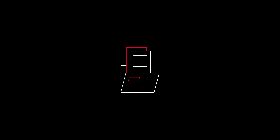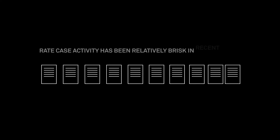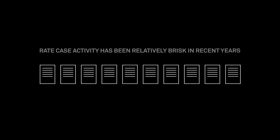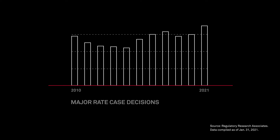Cases are filed at the utility's discretion. The level of rate case activity depends on a variety of factors. Rate case activity has been relatively brisk in recent years, with more than 100 cases decided across the U.S. each year since 2010.